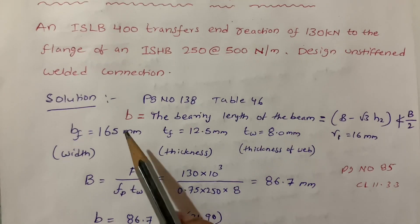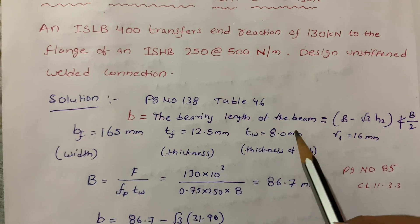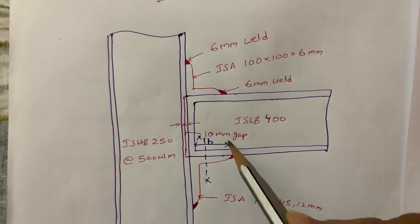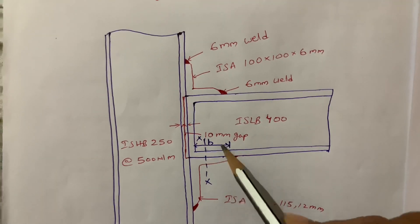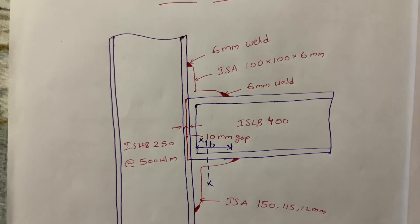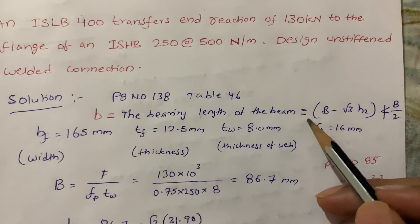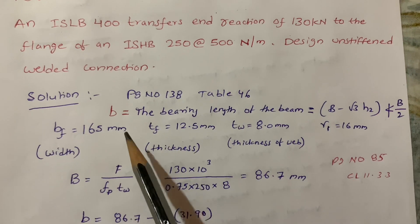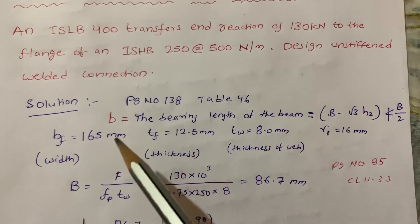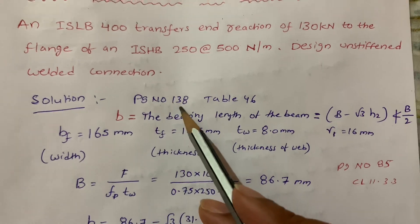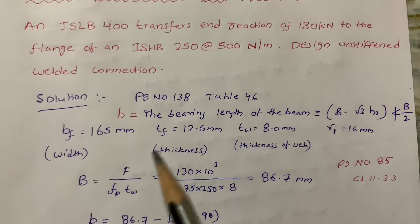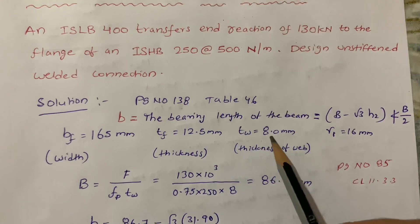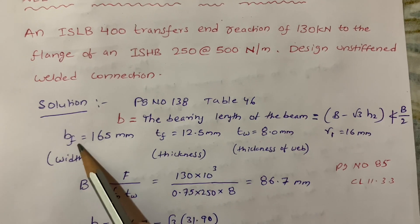First we have to calculate the bearing length of the beam, denoted as small b. The bearing length is the portion from the beam end to the angle edge. The formula is: capital B minus root 3 into h2, which must be less than or equal to b by 2. For ISLB 400, the properties from page 138, table 46 of IS800-2007 are: width 165 mm, flange thickness 12.5 mm, and web thickness 8 mm.